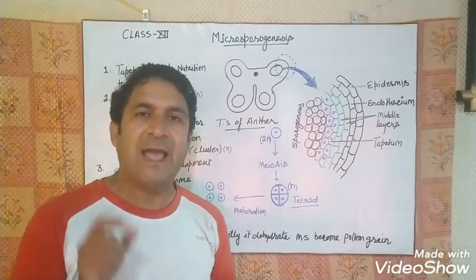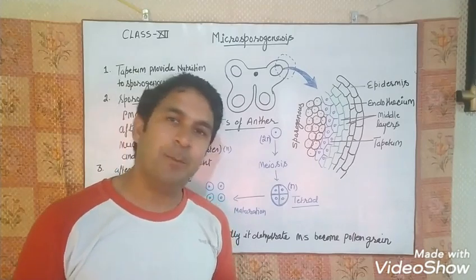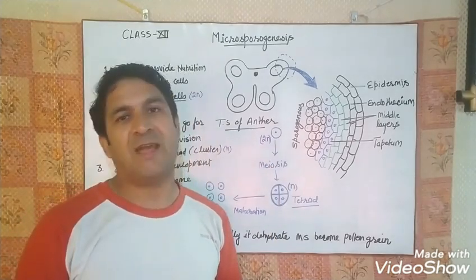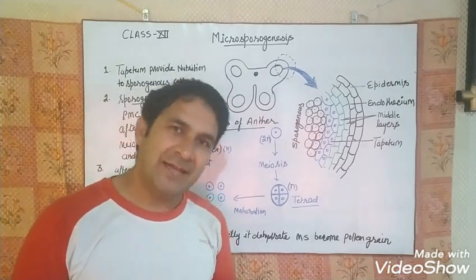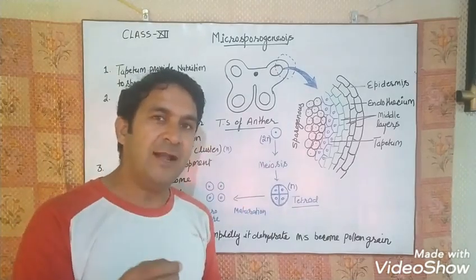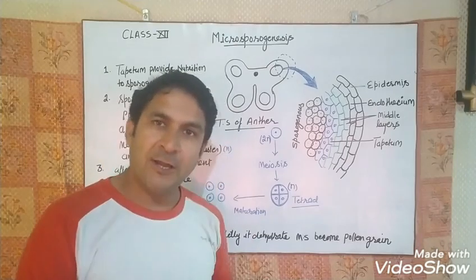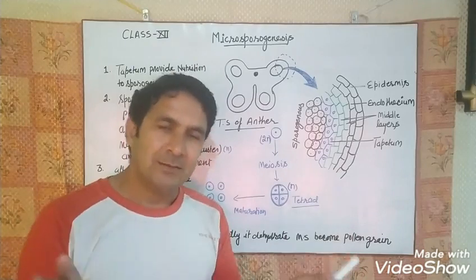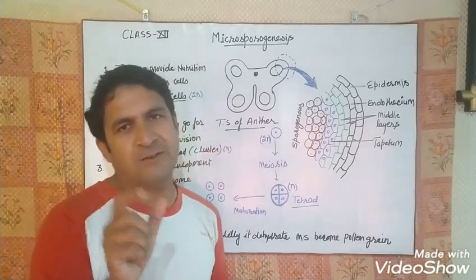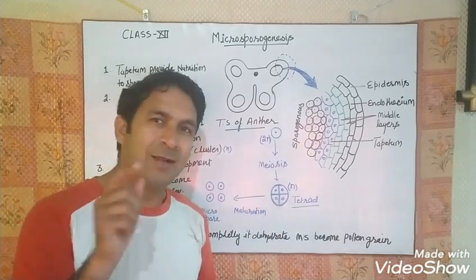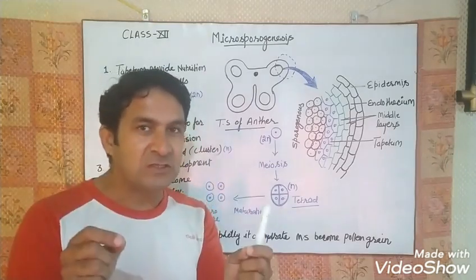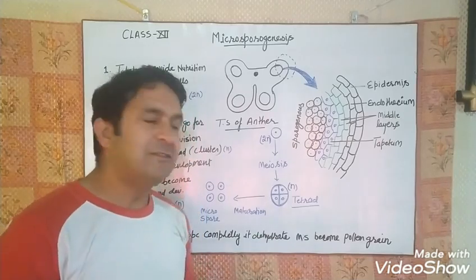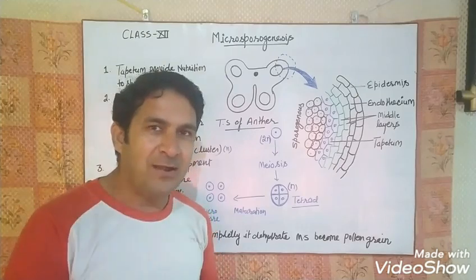We are talking about flowering plants — angiosperms, which are the only flowering plants. The sporogynous cell is found in both types of angiosperm: monocot and dicot. The sporogynous cell divides by meiosis in both, but there is a difference in how that meiosis cell division takes place in monocot versus dicot angiosperms.